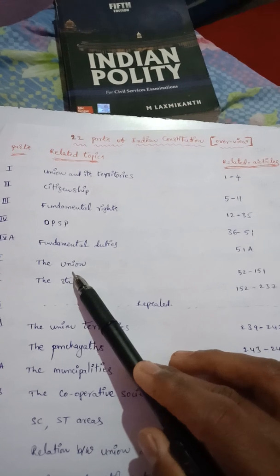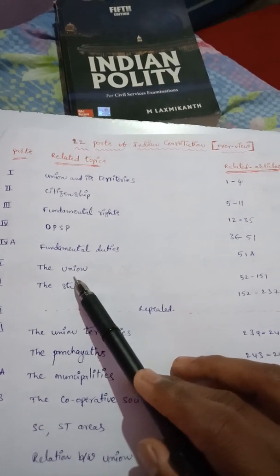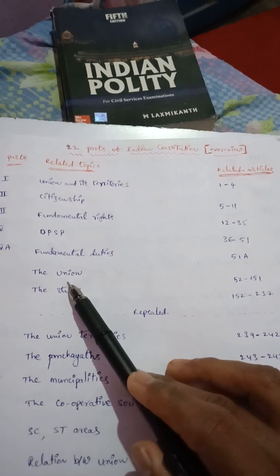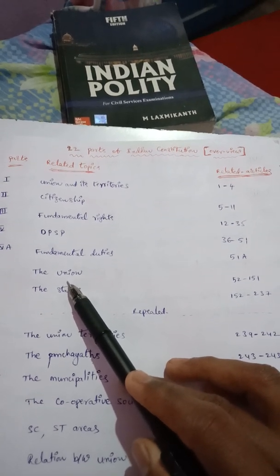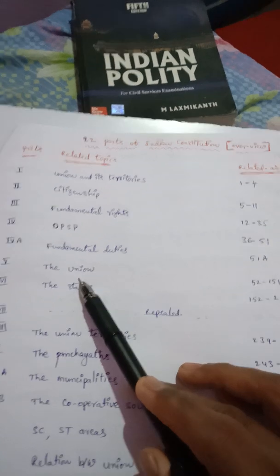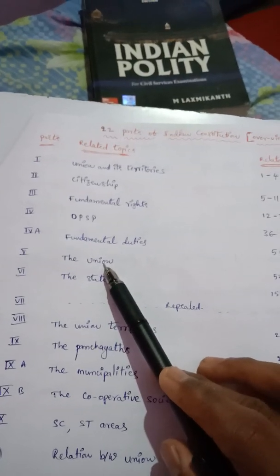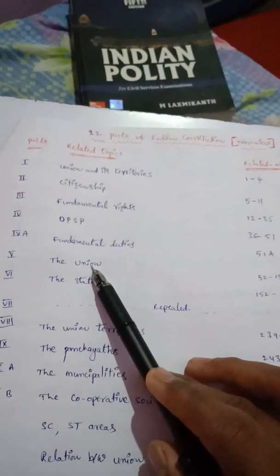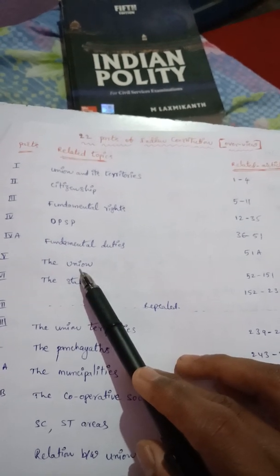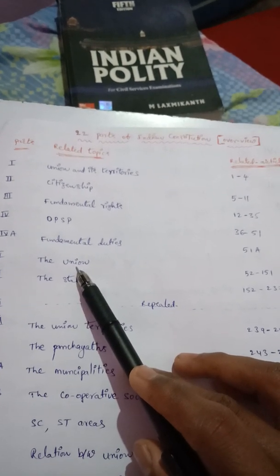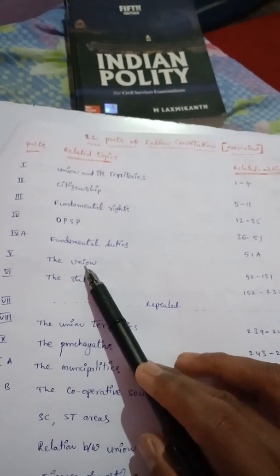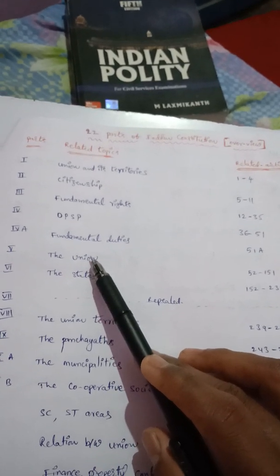Next, Special Leave Petition — that is, an individual takes special permission to be heard in appeal against any High Court, tribunals, or tribunal courts. For example, Krishna Godavari water disputes, Narmada river water tribunals, etc., to the Supreme Court of India.